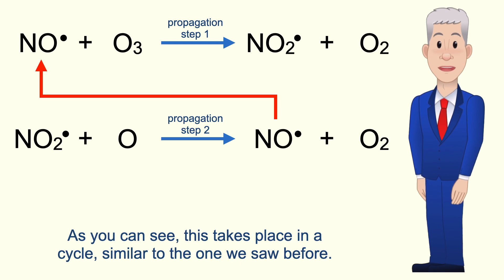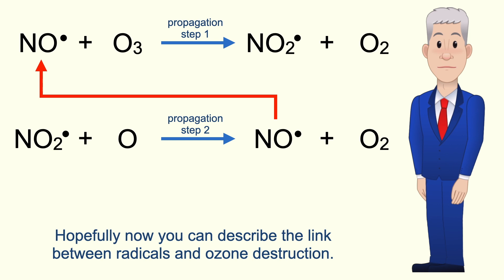As you can see, this takes place in a cycle similar to the one we saw before. So hopefully now you can describe the link between radicals and ozone destruction.